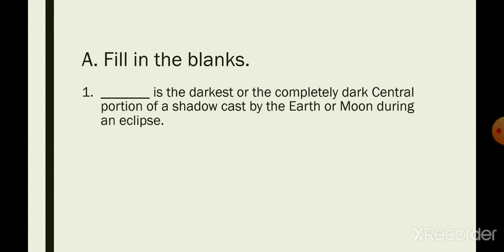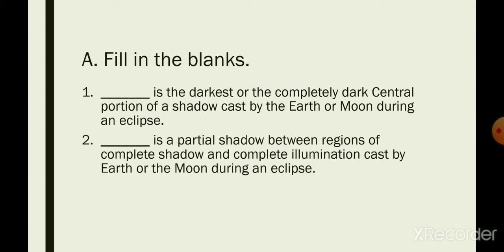Two: blank is a partial shadow between regions of complete shadow and complete illumination cast by Earth or the Moon during an eclipse. Three: the term eclipse is derived from the Greek word eclipsis meaning blank or downfall.